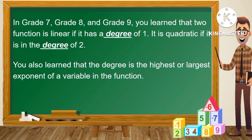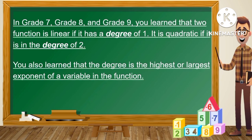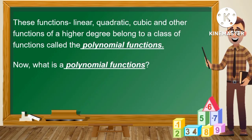When you were in Grade 7, Grade 8, and Grade 9, you learned that a function is linear if it has a degree of 1, and it is quadratic if it has a degree of 2. You also learned that the degree is the highest or largest exponent of a variable in the function. These functions — linear, quadratic, cubic, and other higher-degree functions — belong to a class called polynomial functions.